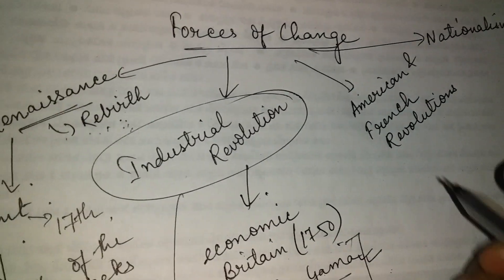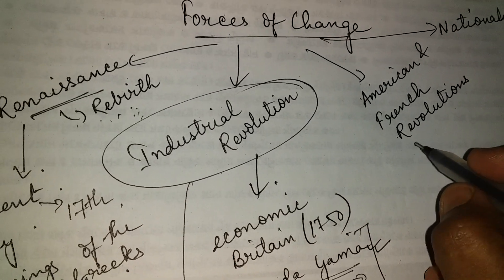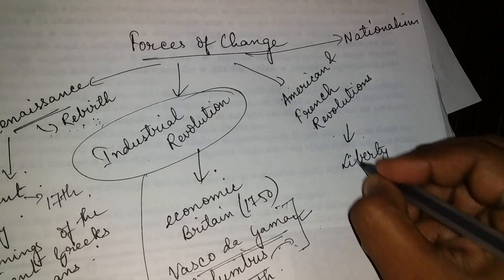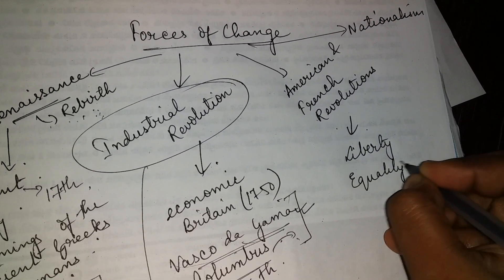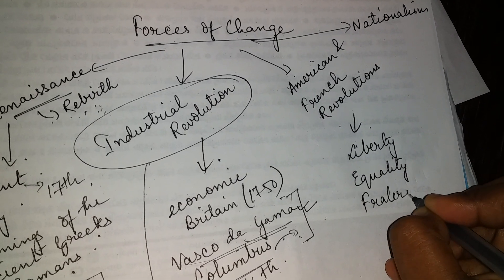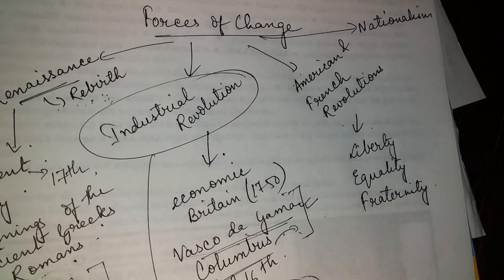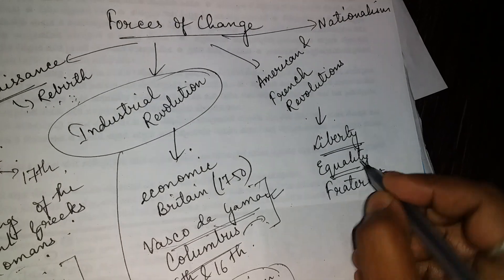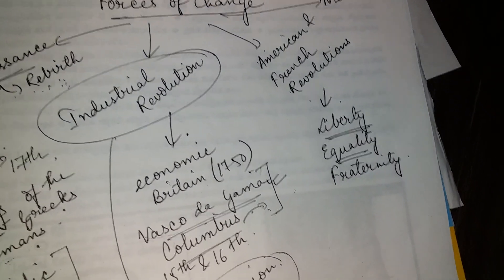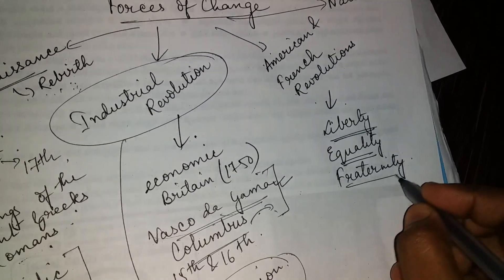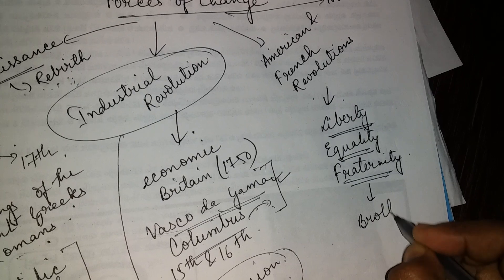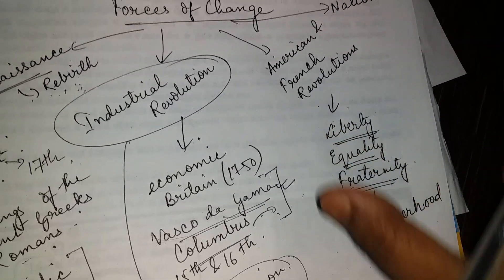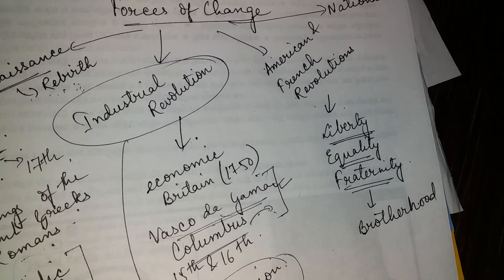Finally, we are going to talk about the American and French Revolutions. These gave us important ideals: liberty, equality, and fraternity. Liberty means giving freedom to everyone. Equality means all are the same — whether Hindu, Muslim, or Christian. And fraternity means brotherhood.